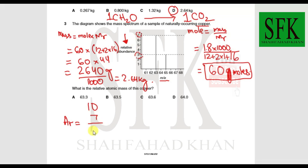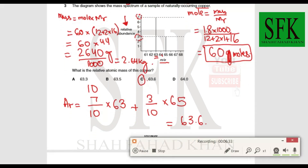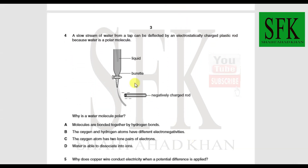To calculate relative atomic mass: take (7/10) × 63 for the first isotope, then (3/10) × 65 for the second isotope, and add them together. The answer is 63.6, so option C is correct.